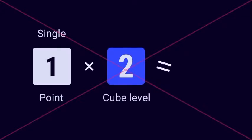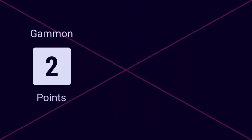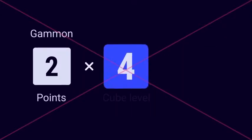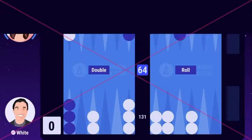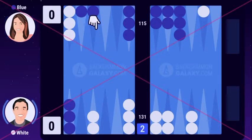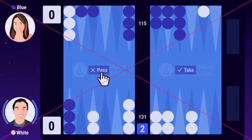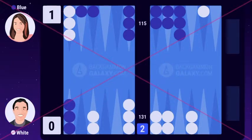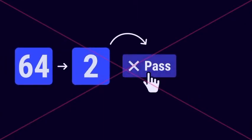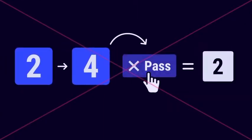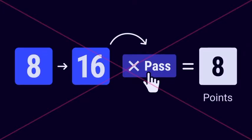Winning a single game with the cube level on 2 will give you 2 points. Winning a gammon, which is 2 points, with a cube level of 4 will give you 8 points. Blue doubles white and white now has two options, pass or take. If he passes, the game ends and his opponent wins the number of points of the cube level. Passing an initial cube wins the opponent 1 point. Passing a redouble from 2 to 4 wins the opponent 2 points. And so on and so forth.